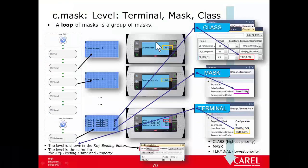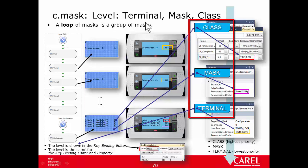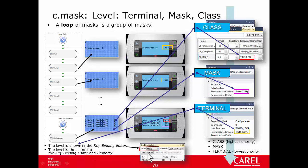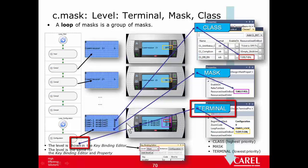So, our first review: there are three levels — terminal, mask, and class. The level is shown in the key binding editor. The same levels apply to properties like 'resource used on bool' as well as for the keys. If you click the background of the grid or select it in the list, you select the terminal level — the properties and key functions you write there will be used for all variables in all masks. It is a sort of default.